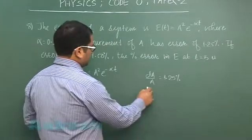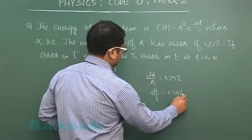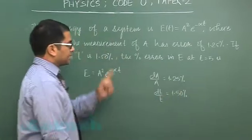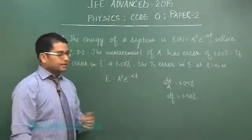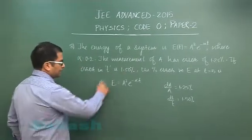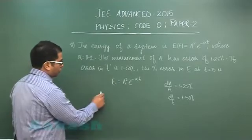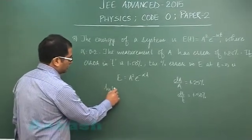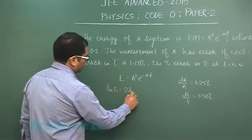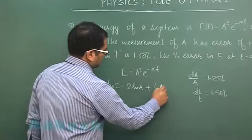Error in t, dt by t, is 1.50% and we need to calculate percentage error in E, that is the energy at t equals to 5. Well, it is an exponential function and that too in the product, so log would be the best option. Log E would be 2 log A plus log of this would be minus of α times t.